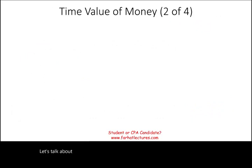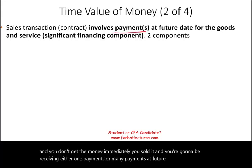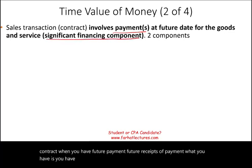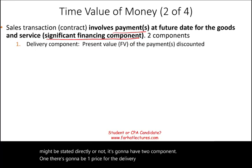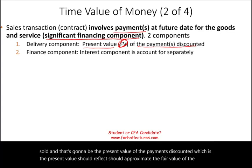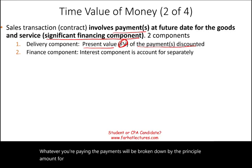Now let's talk about the time value of money. What happens if you sold something and you don't get the money immediately — you'll receive payments at future dates? In that contract with future receipts, you have a significant financing component. The contract will have two components: the delivery component, which is the present value of the payments discounted to approximate fair value, and a financing component, where the interest is accounted for separately.